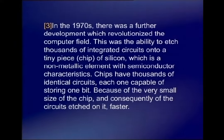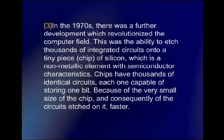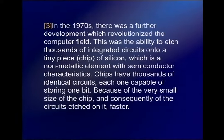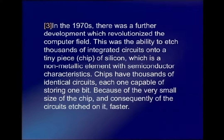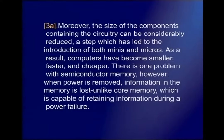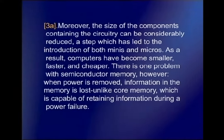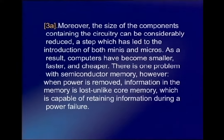In the 1970s, there was a further development which revolutionized the computer field. This was the ability to etch thousands of integrated circuits onto a tiny piece of silicon — that is, the chip — which is a non-metallic element with semiconductor characteristics. Chips have thousands of identical circuits, each one capable of storing one bit. Because of the very small size of the chip and consequently of the circuits etched on it, processing became faster. Moreover, the size of the components containing the circuitry can be considerably reduced, a step which has led to the introduction of both minis and micros. As a result, computers have become smaller, faster and cheaper.